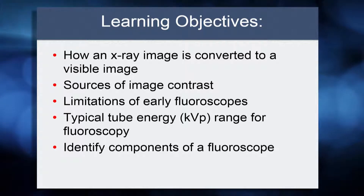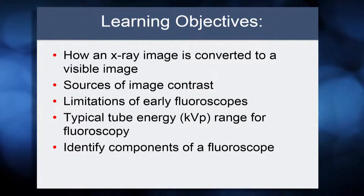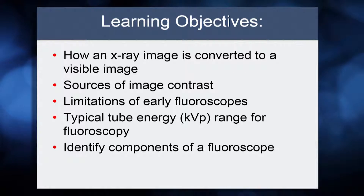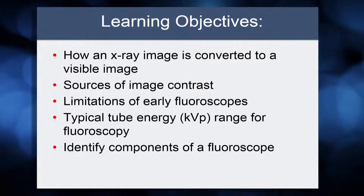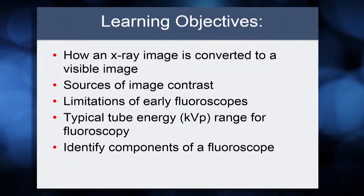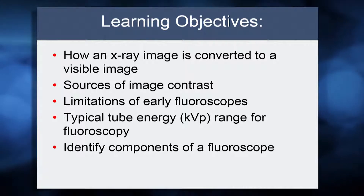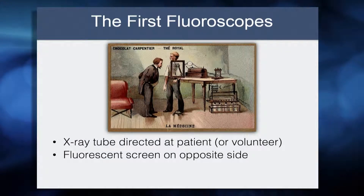It's also going to be important to know what KVP is typical — which a lot of you probably already know, but we want to review that. Tube energy makes a big difference for image contrast and for patient dose, so you should have a solid concept of the typical ranges. And if you happen to see a diagram or a photo of a fluoroscope, be able to point out the components: where the tube is, where the eye is, and so forth.